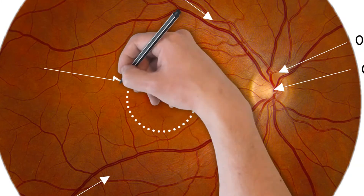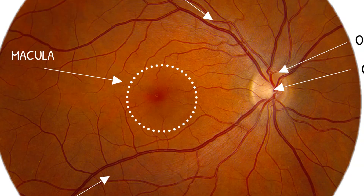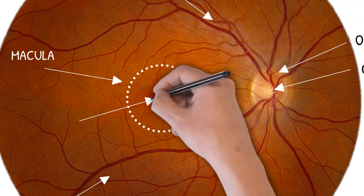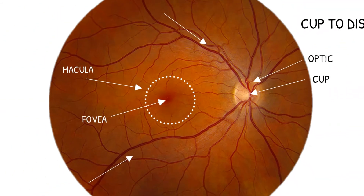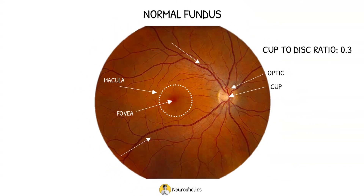The macula is found lateral or temporal to the optic disc. The central part of the macula, known as the fovea, is about the same diameter as the optic disc and appears darker than the rest of the macula due to the presence of an additional pigment.